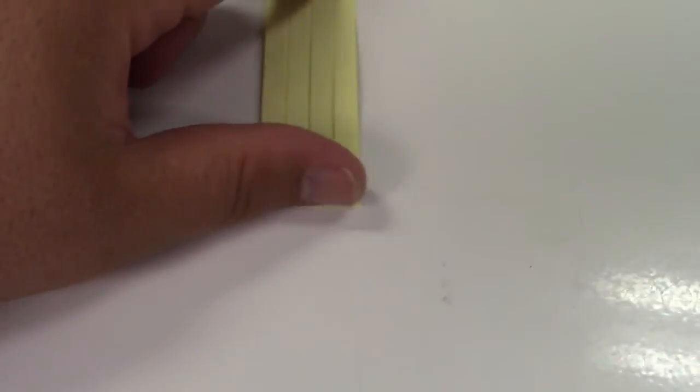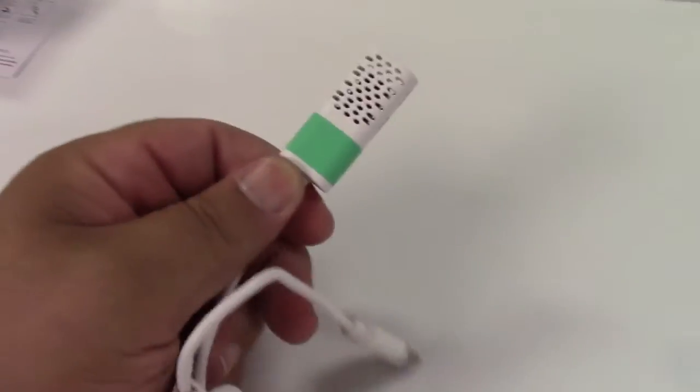In the box you get an instruction booklet, some test strips I'll show you a little bit later, a spoon for the salt, and here is the generator itself.